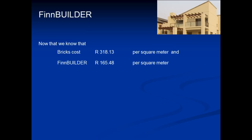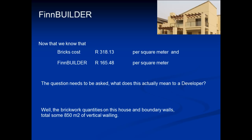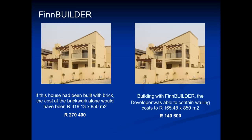Now that we know that building with brick costs 318 Rand a square meter and FinBuilder just 165 Rand, the question needs to be asked: what does this actually mean to a developer? Well, the brickwork quantities on this house and boundary wall total some 850 square meters of vertical walling. If this house had been built with brick, the cost of the brickwork alone would have been 270,000 Rand. Building with FinBuilder, the developer was able to contain walling costs to 140,000 Rand — a saving of 130,000 Rand.